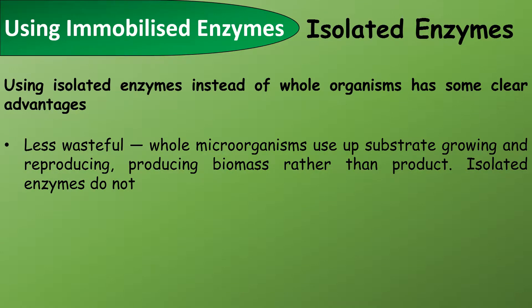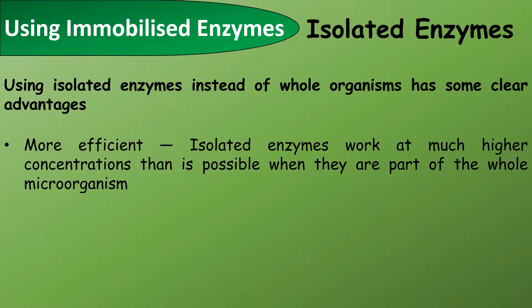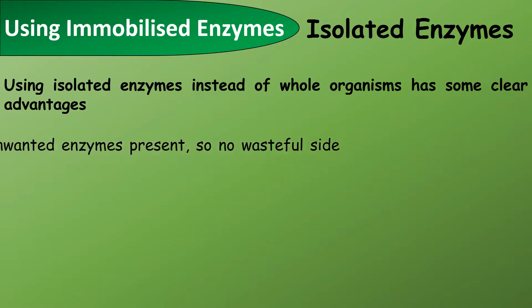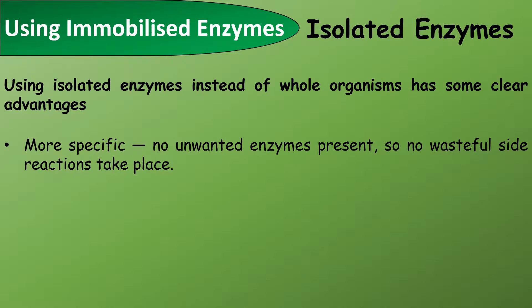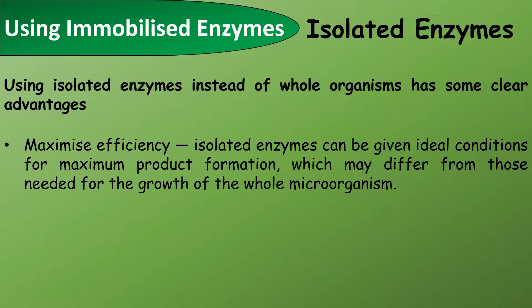Using isolated enzymes instead of whole organisms have some clear advantages. They're less wasteful — whole organisms use up substrate growing and reproducing biomass rather than product, whereas isolated enzymes do not. They're more efficient, as isolated enzymes work at much higher concentrations than is possible when they are part of a whole microorganism. They're more specific, as there are no unwanted enzymes present, so no wasteful side reactions take place. And they maximize efficiency — isolated enzymes can be given ideal concentrations and conditions for maximum product formation, which may be different from those needed to grow the whole microorganism.